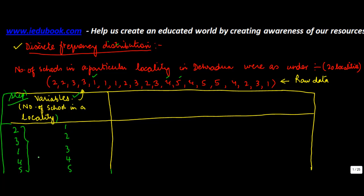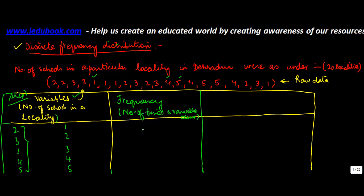Then the second step is you start looking at this data and try to put in how many times each of these variables is coming — that is known as the frequency, or number of times a variable occurs. You can start counting each one independently, but that is likely to cause some error. So what we do is we start using tally marks. To understand tally marks, you can refer to our previous videos meant for earlier classes.